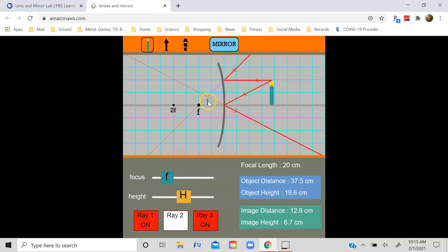And then I can adjust, for example, the image size and the image distance by manipulating the object from the mirror.